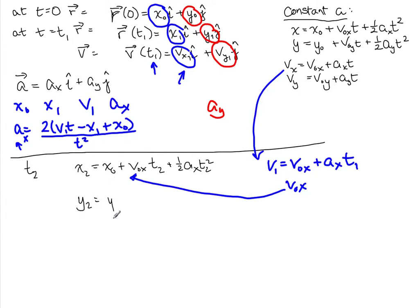So I'm going to have y0 plus v0 in the y direction t2 plus 1 half a in the y direction t2 squared. So I can find the y at t2, and that will give me the overall vector. So our vector of t2 is going to be x2 i hat plus y2 j hat.